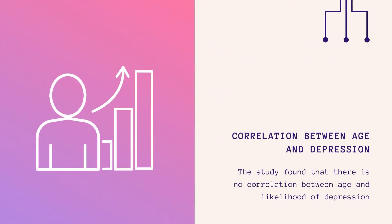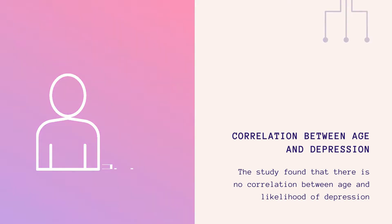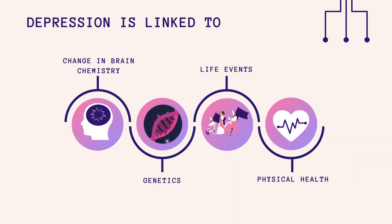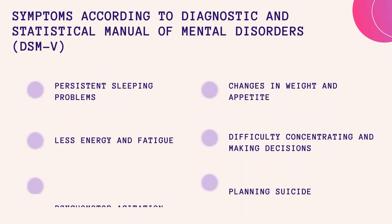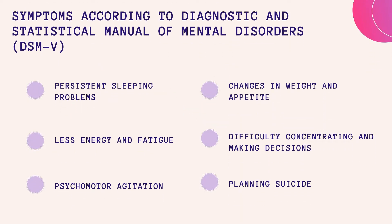The study done by Minou Park et al. found that there is no significant correlation between age and likelihood of depression. Statistics derived by Amy Moran concluded that depression is linked to change in brain chemistry, hormones, genetics, life events, and physical health.